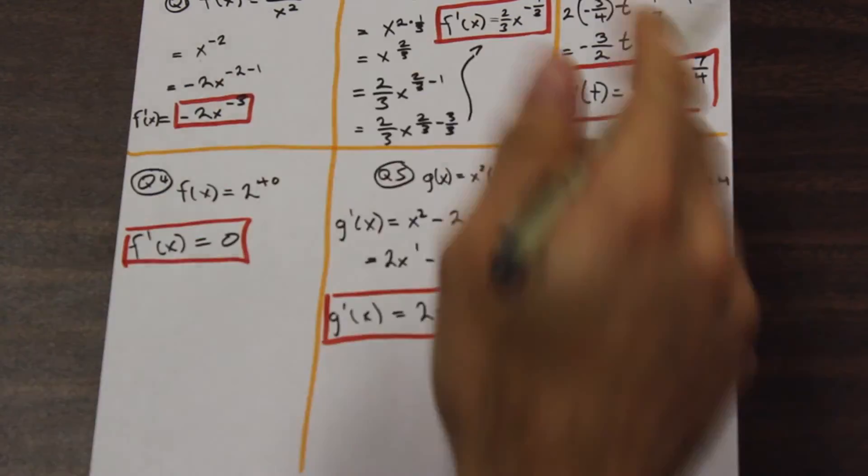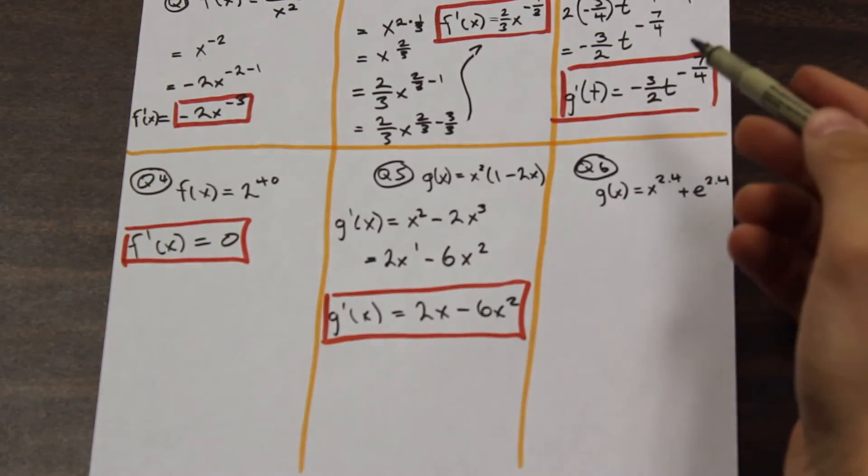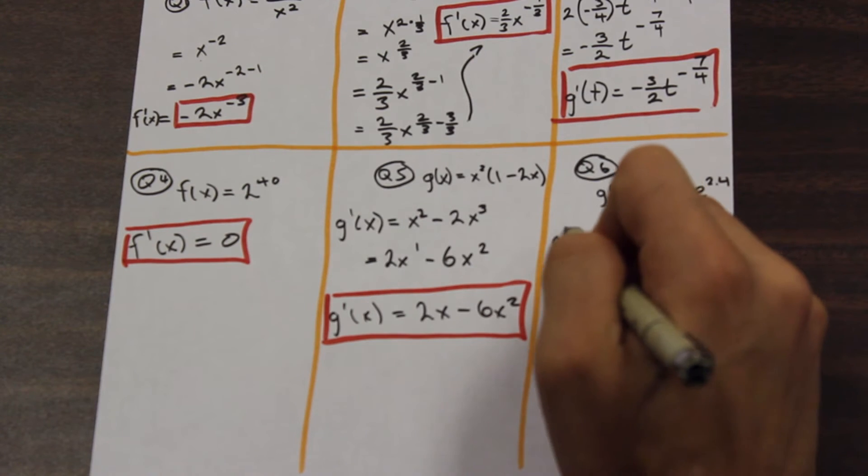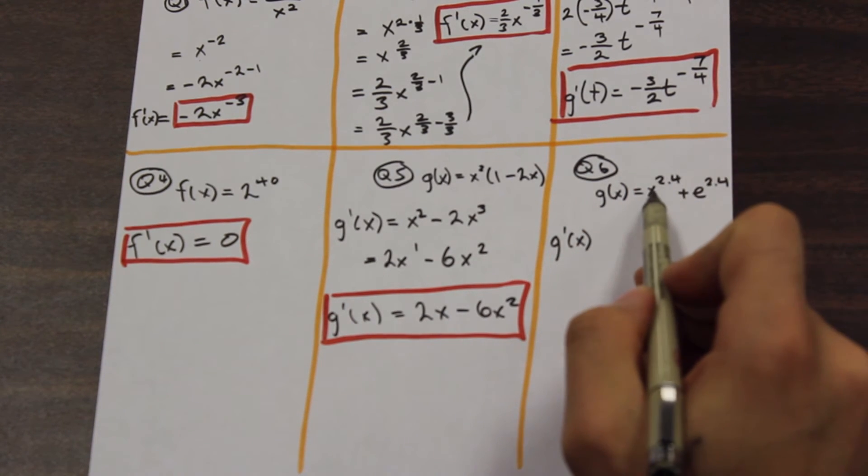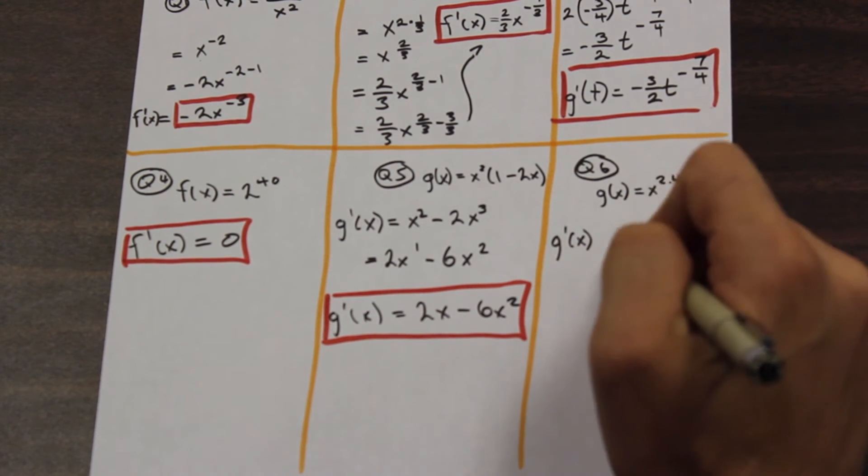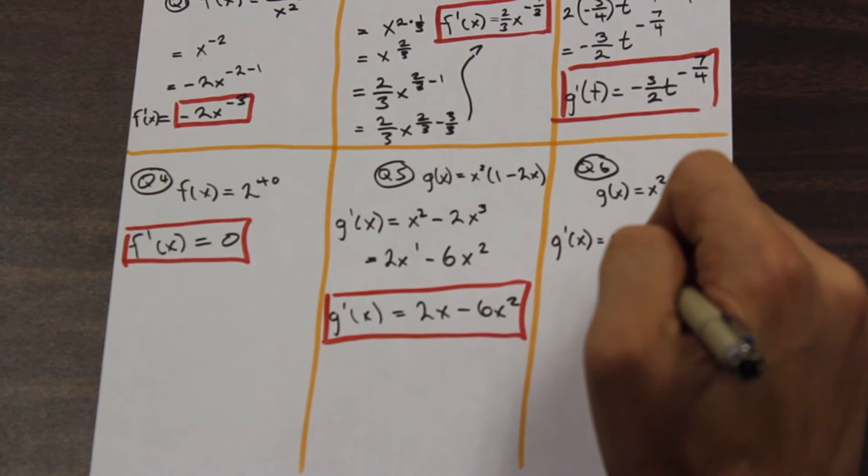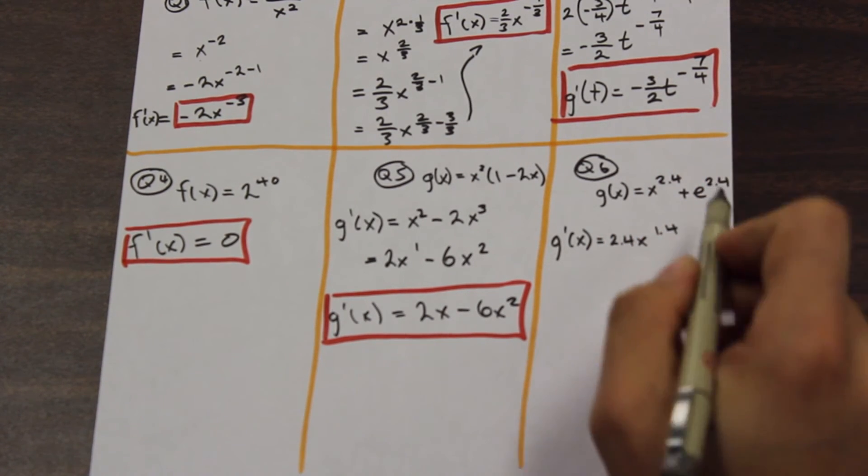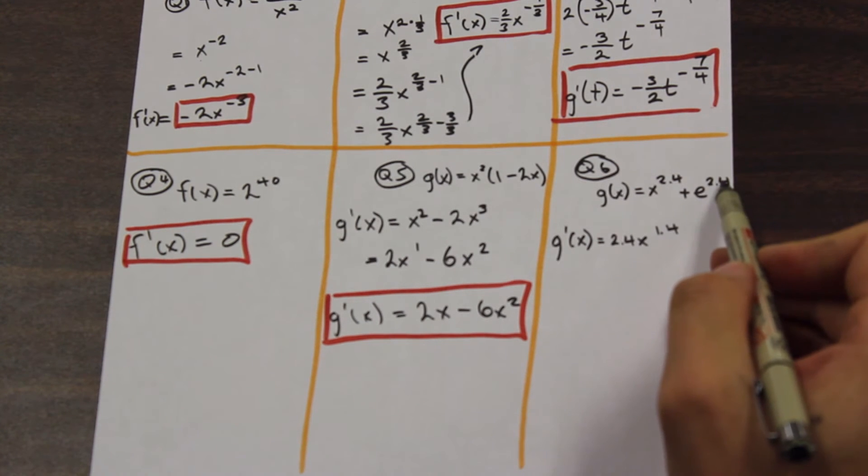And guys, feel free to go back and just do all of these on your own or pause the video before I start and try and do it on your own. We have g of x, so g prime of x. So we have x to the 2.4, so we're going to bring that 2.4 down, 2.4x. And 2.4 minus 1 is 1.4.